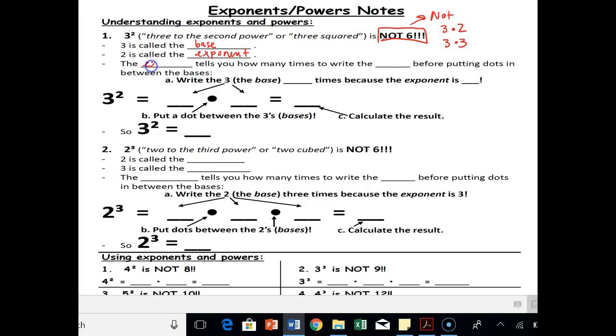The exponent, the little number, tells you how many times to write the base before putting dots in between. So write 3, the base, 2 times, because it's 3 squared, because the exponent is 2. So 3 to the 2 means 3 times 3, which is 9. Obviously not 6, right? And it's not 3 plus 3, it's 3 times 3. So 3 squared is not equal to 6, it's equal to 9.